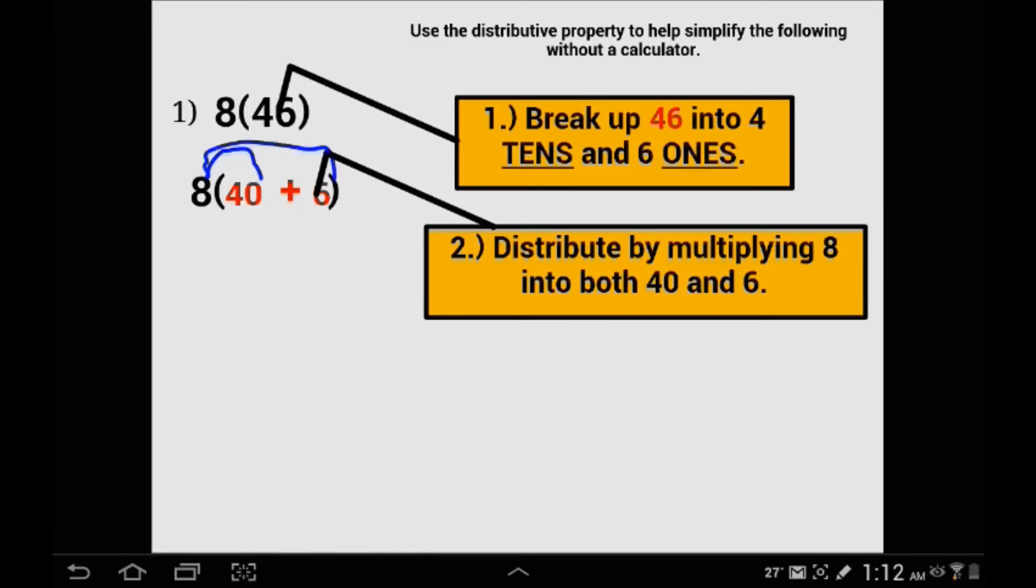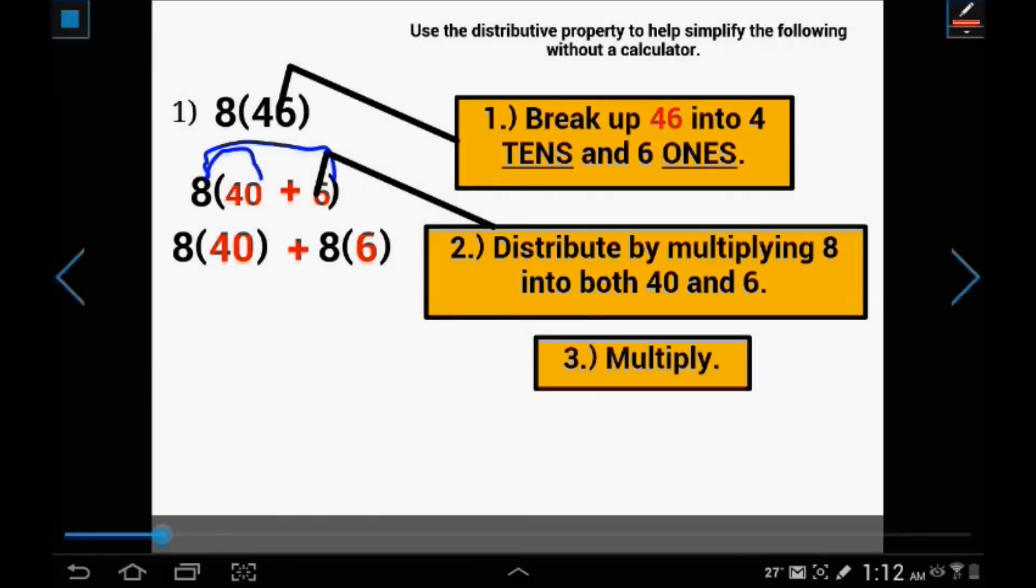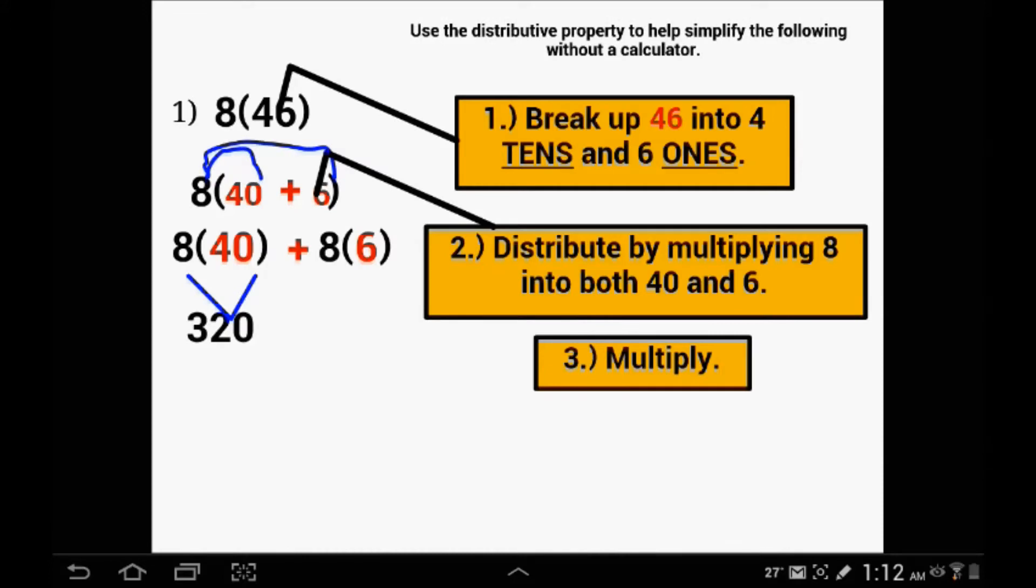Our next step is to multiply, which we are going to call distributing. We are going to distribute the 8 into both terms: 8 times 40 and 8 times 6, with a plus sign in between. 8 times 40 is 320 because 8 times 4 is 32. 8 times 6 is 48. Now it's just a matter of putting them together: 320 plus 48 is 368.